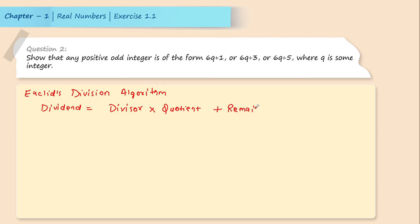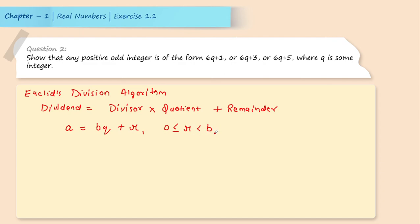Let us take dividend as a, divisor as b, quotient as q, so we get bq, and remainder as r. We know that remainder will always lie between 0 and strictly less than b, because the remainder cannot be greater than or equal to the divisor. Therefore: a = bq + r, where 0 ≤ r < b.